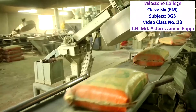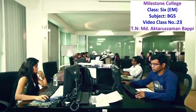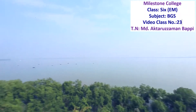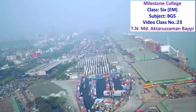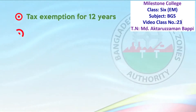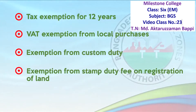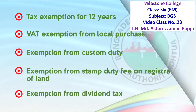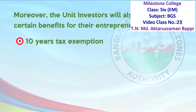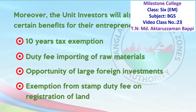BEZA will work as the cornerstone in establishing Bangladesh as a prosperous and developed country. The developers of economic zones will enjoy tax exemption for 12 years, VAT exemption from local purchases, exemption from customs duty, exemption from stamp duty fee on registration of land, and exemption from dividend tax. Investors will also enjoy benefits such as 10 years tax exemption, duty-free importing of raw materials, opportunity of large foreign investments, and exemption from stamp duty fee on registration of land.